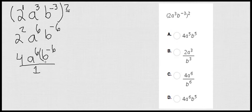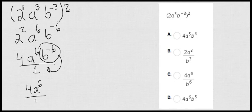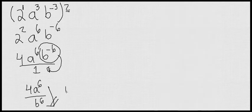So we're going to go ahead and move this guy to the bottom so it can become positive. So I have on the top 4a to the 6 over b to the 6, and that is my answer.